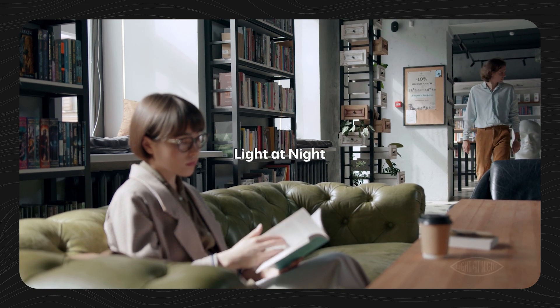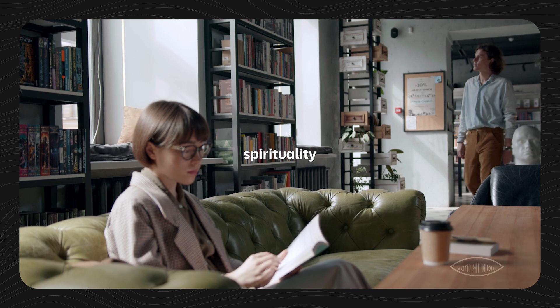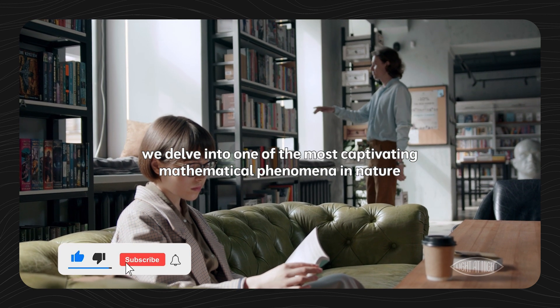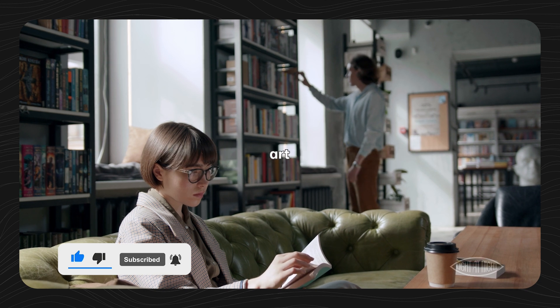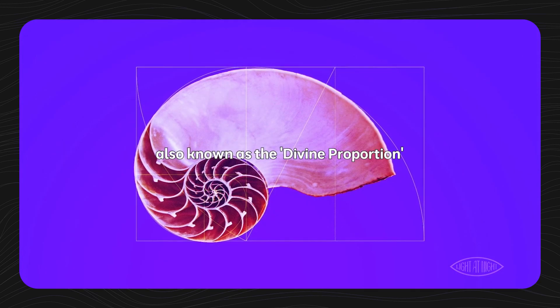Welcome to Light at Night, where we explore the mysteries of the universe, philosophy, spirituality, and art. In this episode, we delve into one of the most captivating mathematical phenomena in nature, art, and architecture: the golden ratio, also known as the divine proportion.